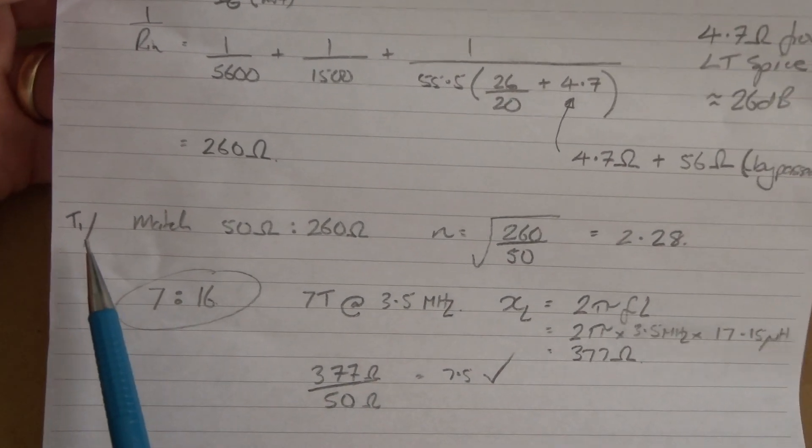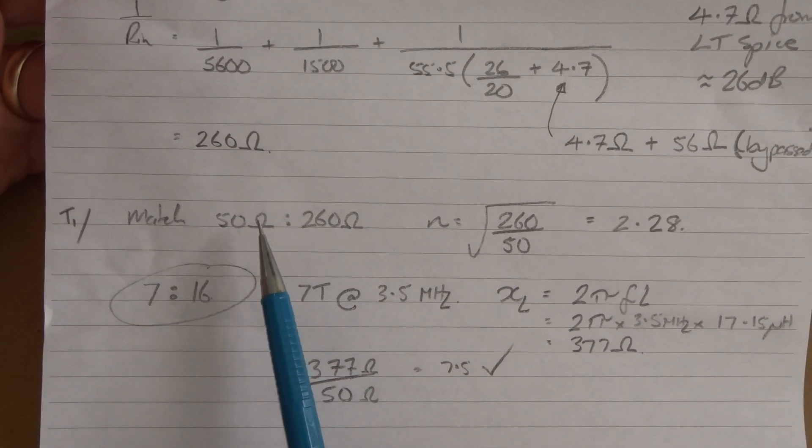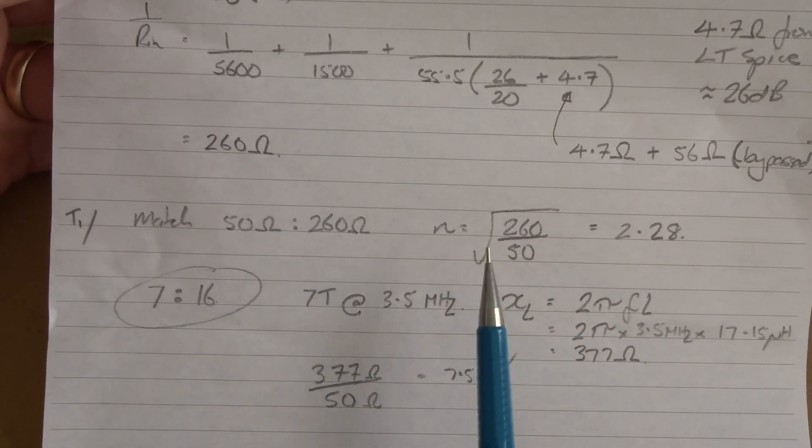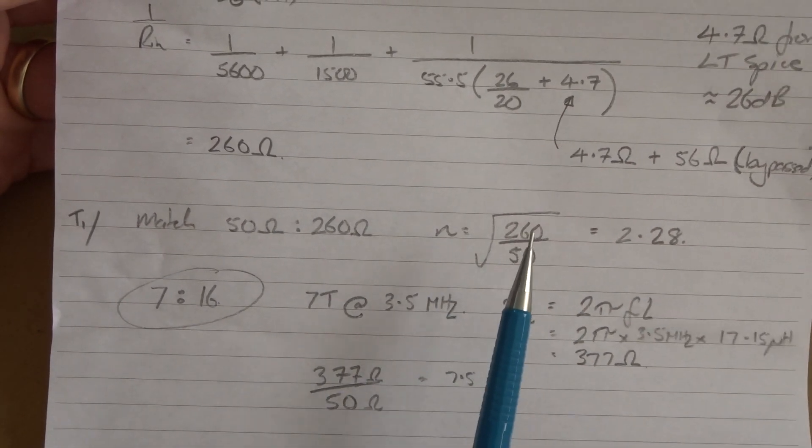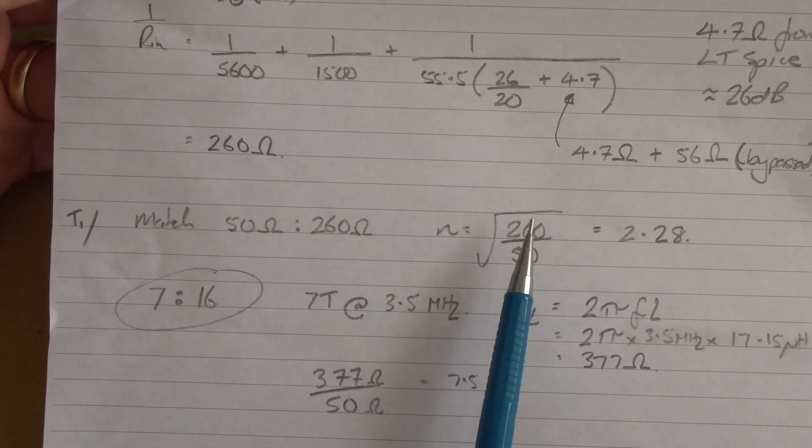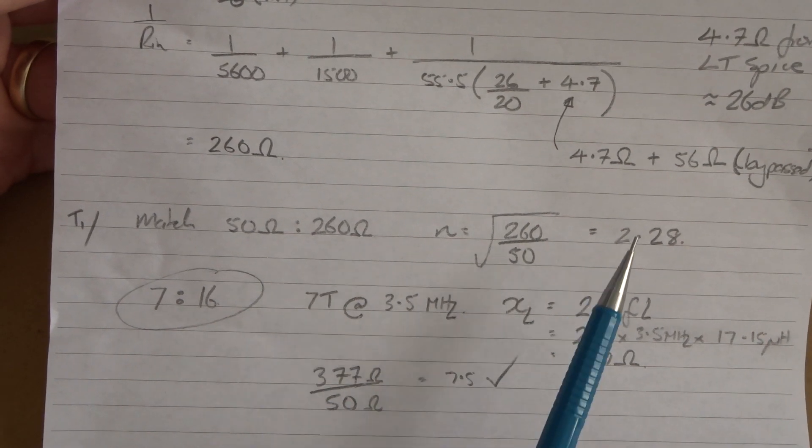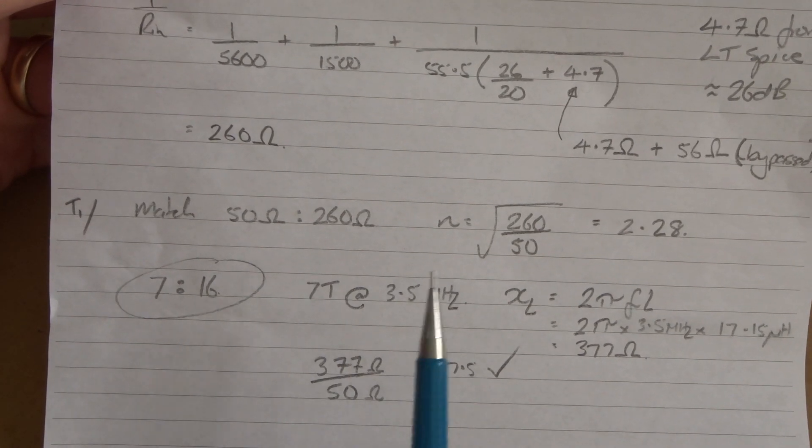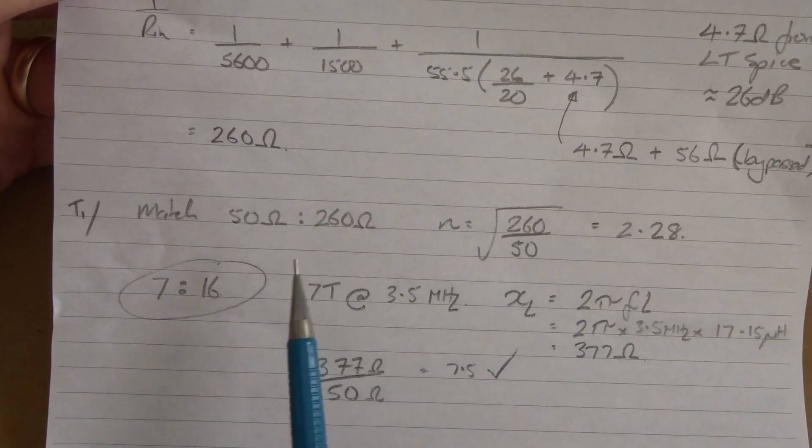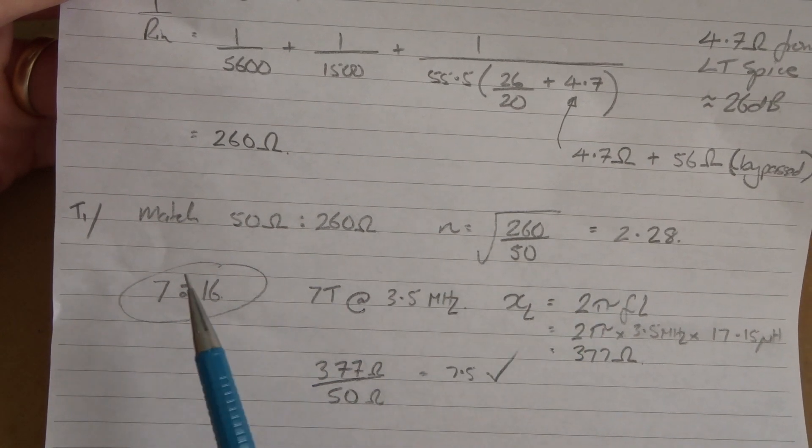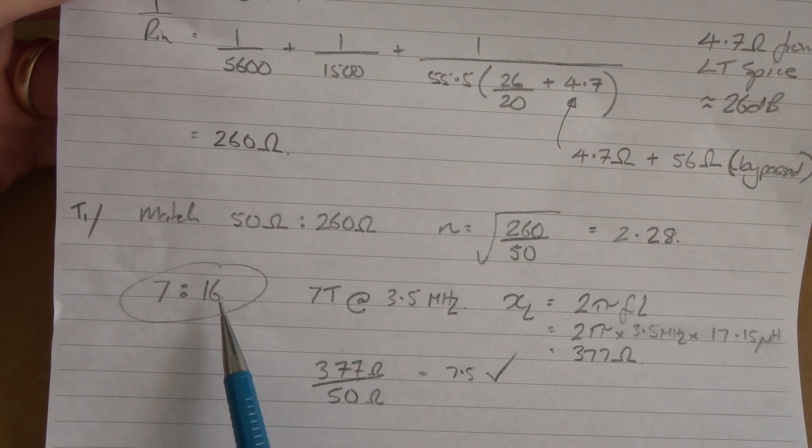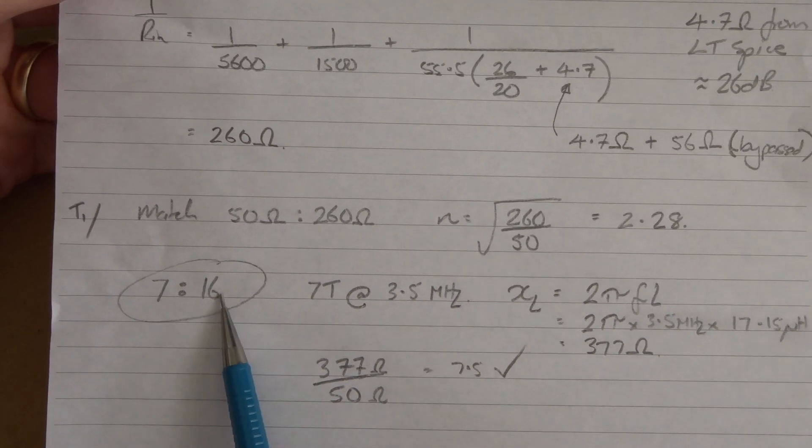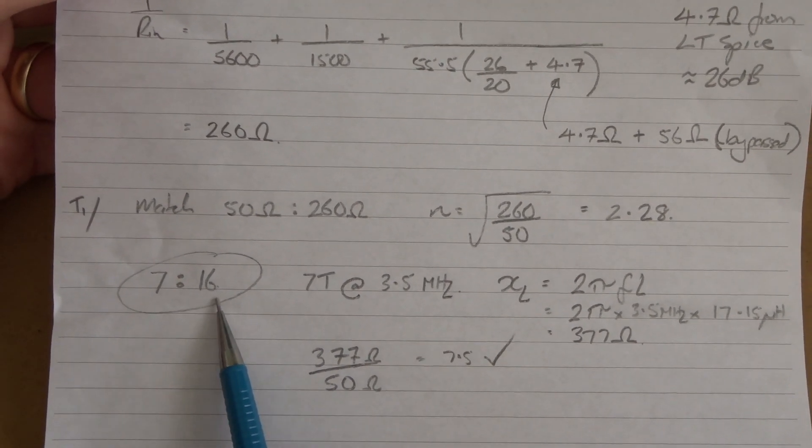So T1, our input transformer, needs to go from 50 ohms to our 260 we just calculated. N equals the square root of those two resistances - it comes out at 2.28. An integer value for the primary and secondary, close enough, is 7 to 16. But I want to make sure that rule of thumb - the smaller winding, the 7 turn winding, its inductive reactance at the lowest frequency of operation, 3.5 megahertz...